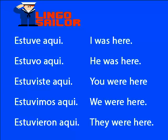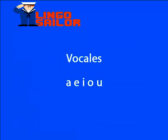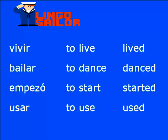Los verbos en pasado se refieren a las acciones o eventos en el pasado. Pueden ser regulares, que simplemente terminan con una D o ED, o irregulares, que cambian su ortografía. Los verbos regulares hacen su pasado añadiendo D o ED al infinitivo. Ejemplos: vivir → to live → lived; bailar → to dance → danced; comenzar → to start → started; usar → to use → used.